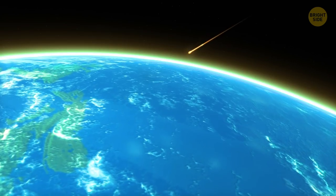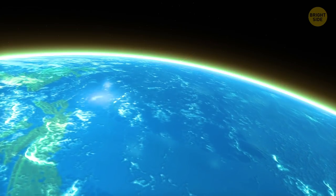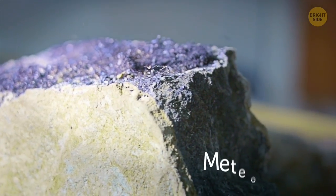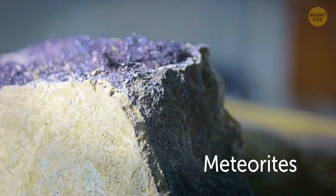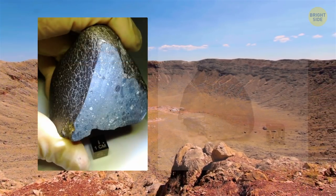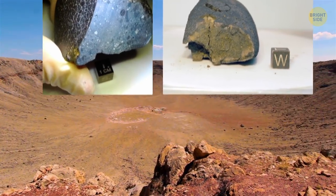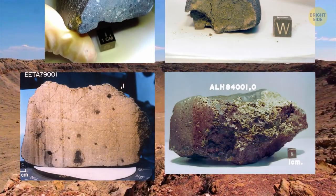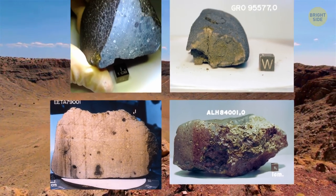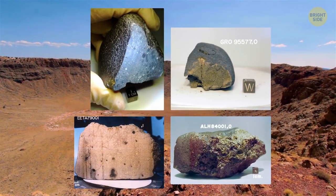There are Martian rocks on Earth. Small space rocks enter the Earth's atmosphere all the time. We call them meteorites. A total of 61,000 such stones were found on Earth, and 224 of them came from Mars. In 2011, scientists discovered a small Martian rock that's a few billion years old.